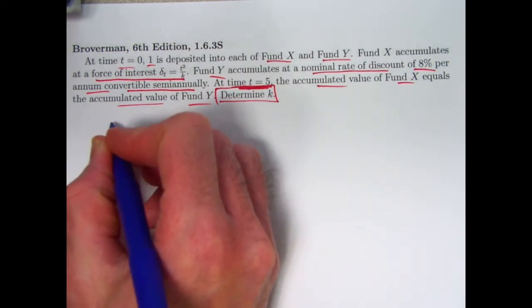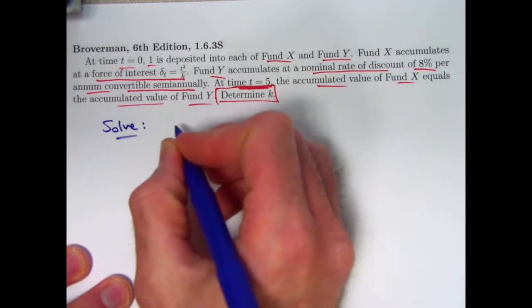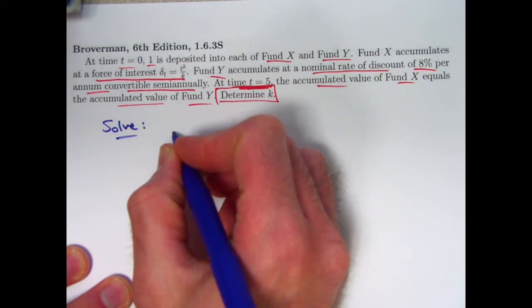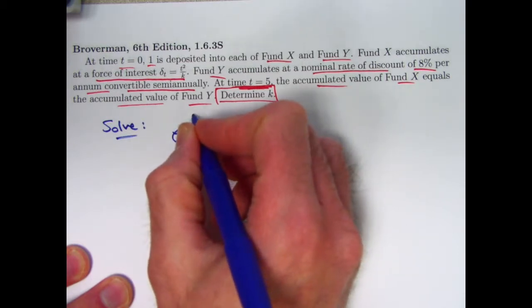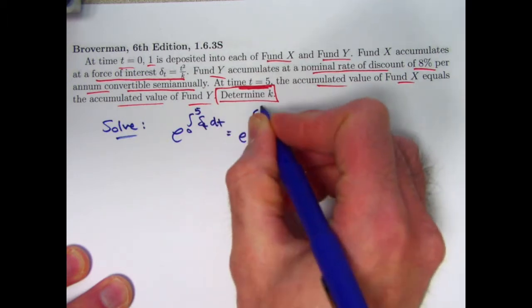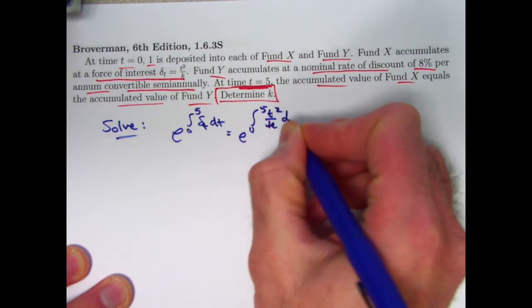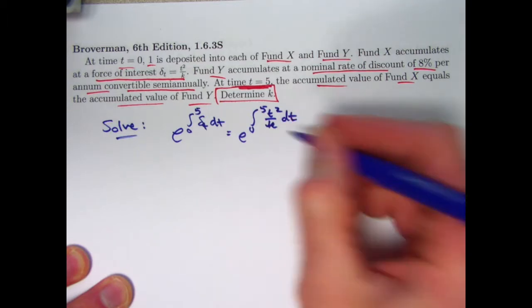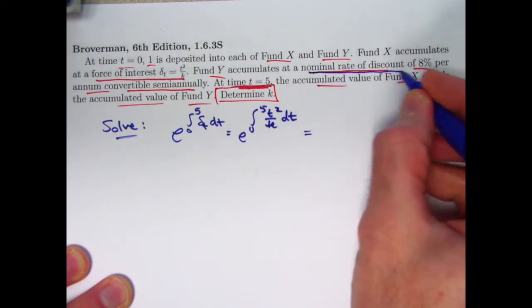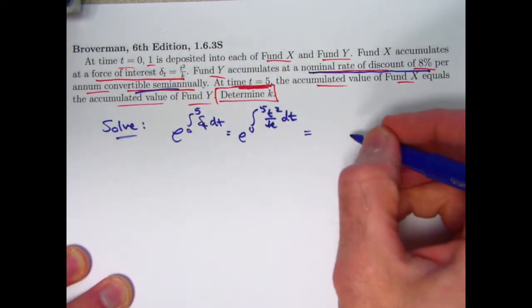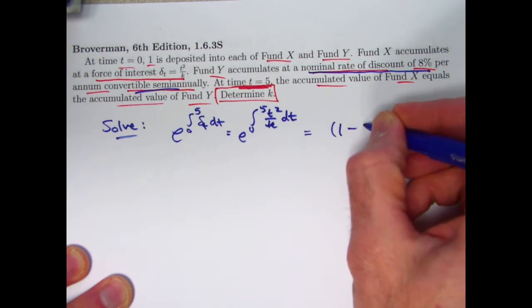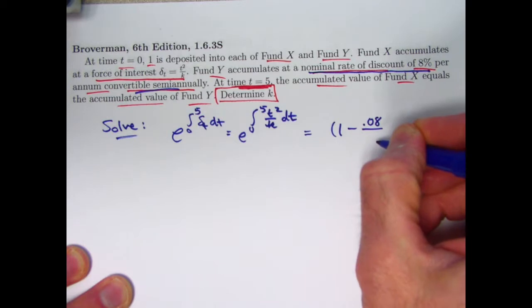So, let's see, we need to set up our equation here. We're depositing one, so the initial amount is one in both cases. The fund x is going to accumulate after five years to the value e to the integral from 0 to 5 of t squared over k. I like making my k's cursive there. If you can't quite tell what that is, that is a k. That must equal what the fund is after five years according to the nominal rate of discount, 8% twice per year.